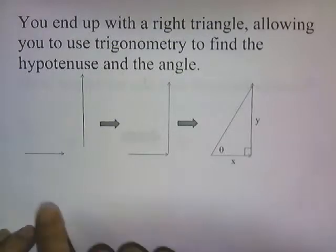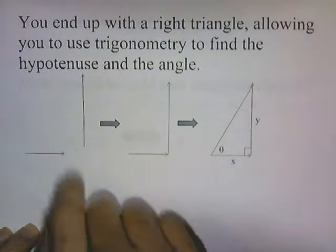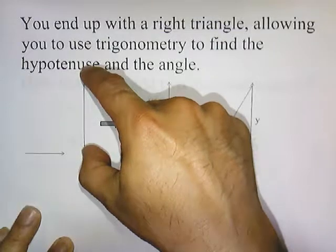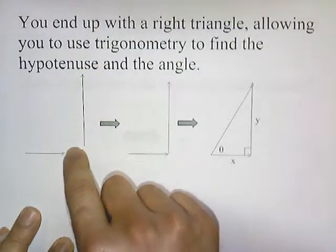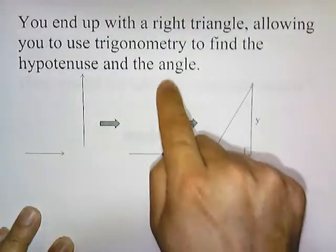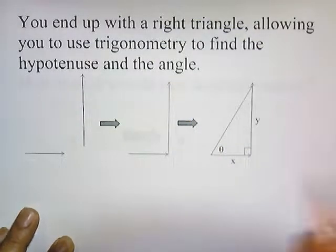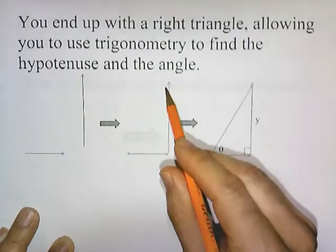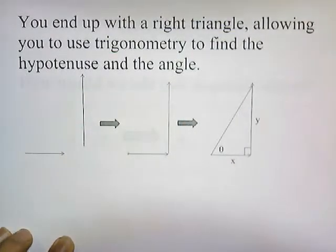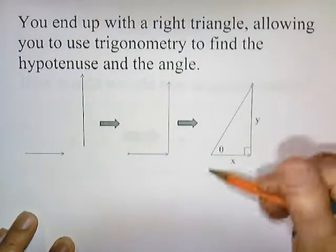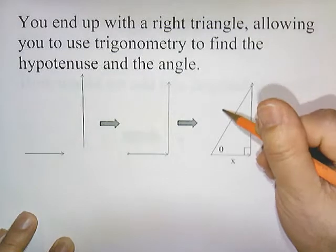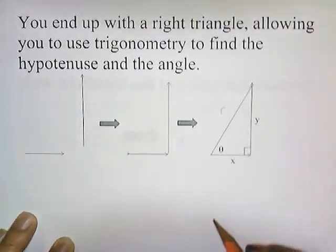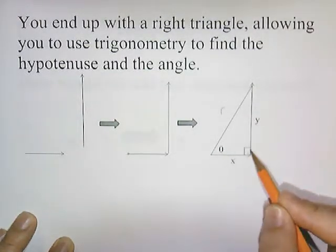Here's our example. Here's a horizontal vector, here's a vertical vector. We move this vector over so that the tail of the vertical vector is at the head of the first vector. Afterward, you draw a line from the tail of the first vector to the head of the second vector. Now we have a right triangle. We can use the Pythagorean theorem to find the hypotenuse, and then to find this angle, we can use the tangent function.